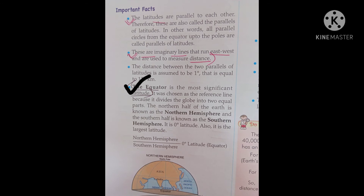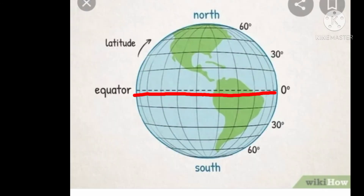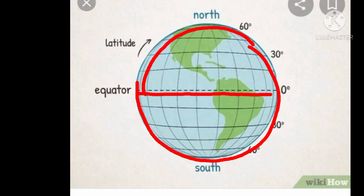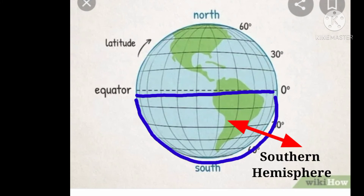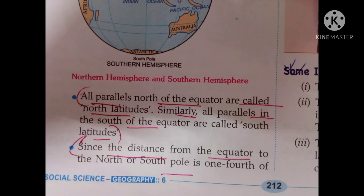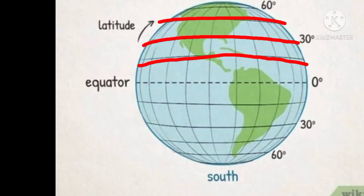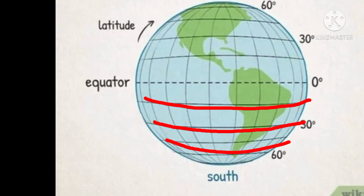The equator is the most significant latitude, marked by 0 degrees. It divides the globe into two equal parts. The northern half of the earth is known as the northern hemisphere and the southern half is known as the southern hemisphere. All parallels north of the equator are called north latitudes; similarly, all parallels south of the equator are called south latitudes.